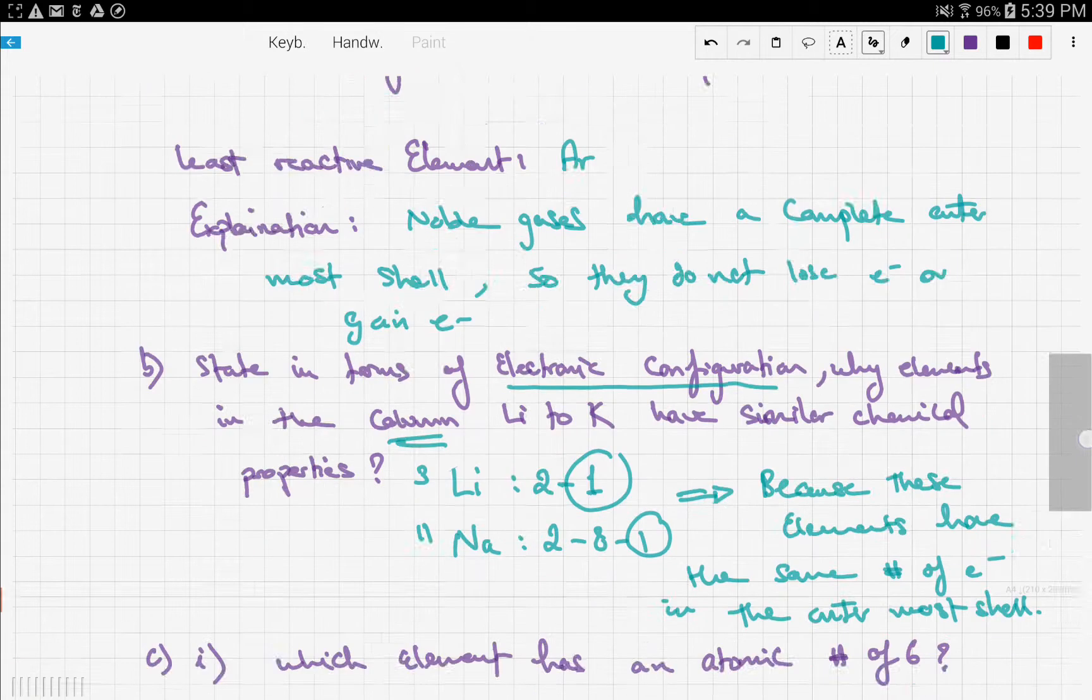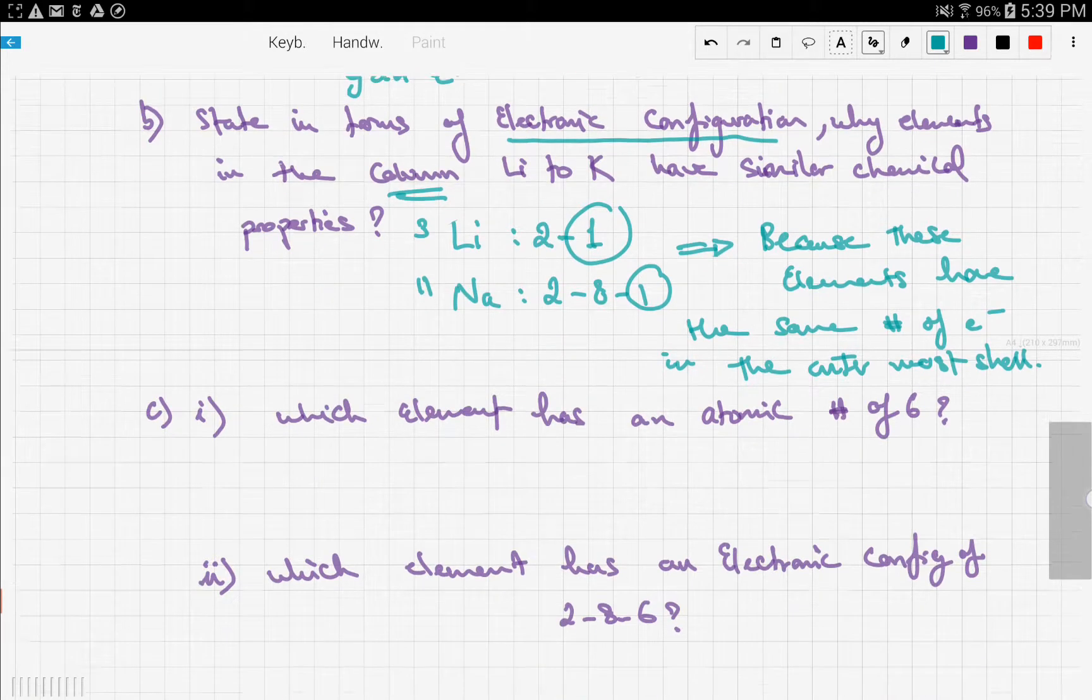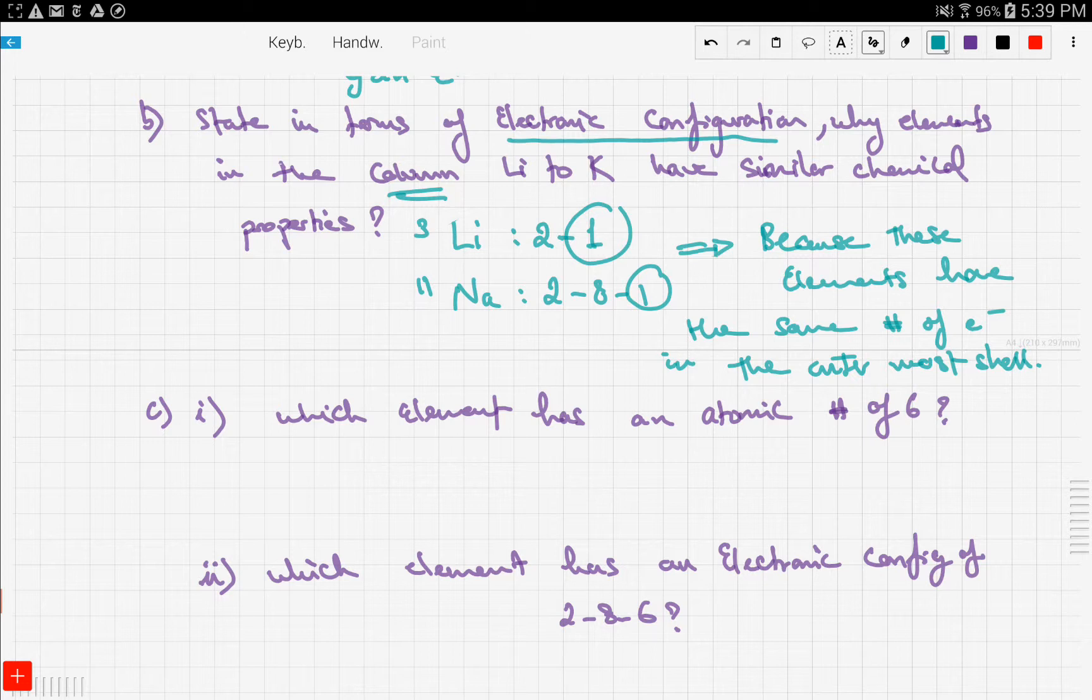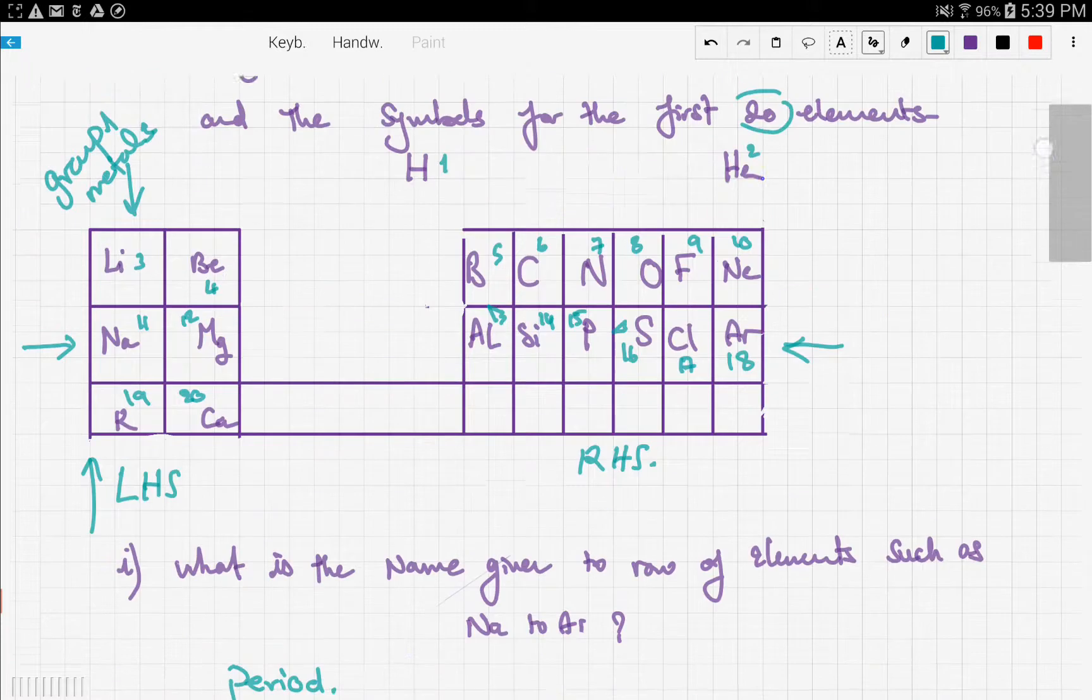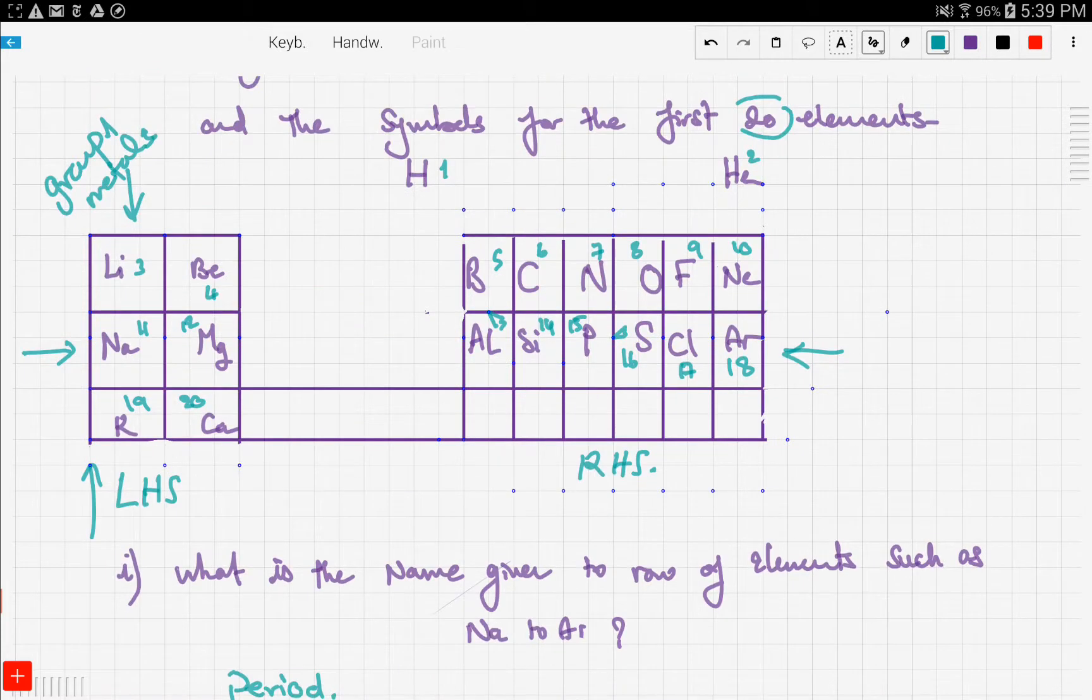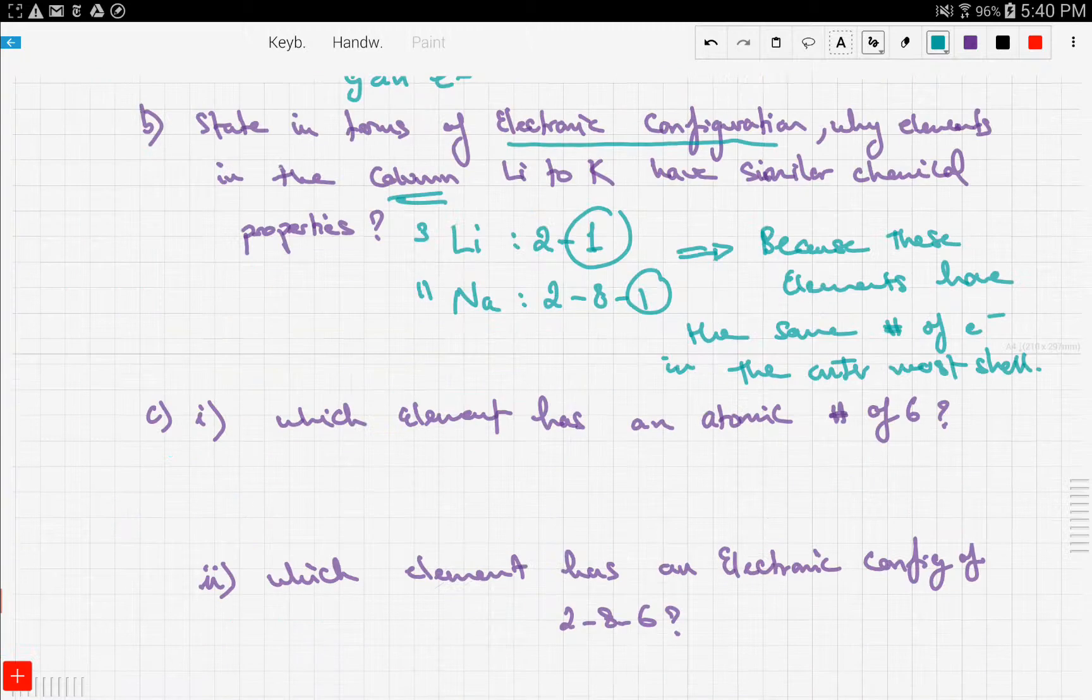Next question: which element has an atomic number of 6? This is why we number the elements in the first place. Number 6 is carbon, so you write carbon. Its symbol is C.